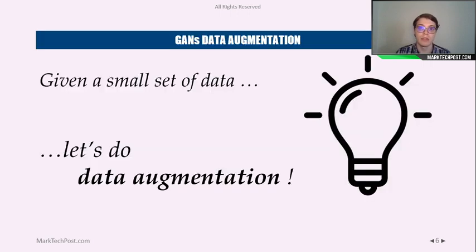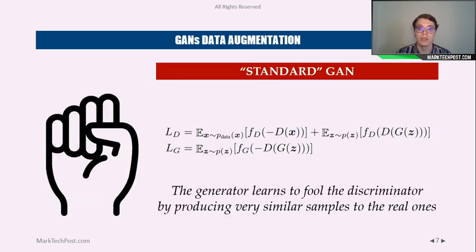As we do for other models, even with a small set of data, to avoid overfitting we can try data augmentation. The standard GAN relies on two different loss functions: the first one refers to the training of the discriminator, and the second one refers to the generator. In a standard GAN, the generator learns to fool the discriminator by producing very similar samples to the real ones.